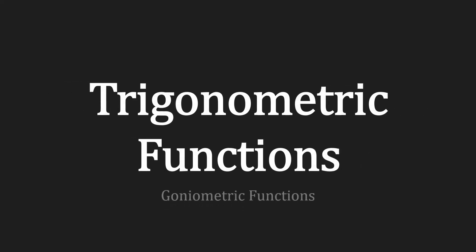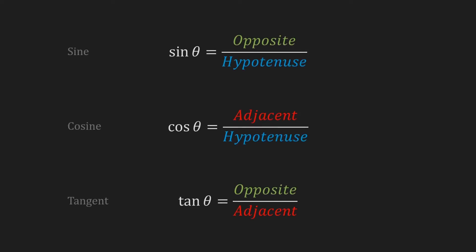We also call them goniometric functions. The first three ones we'll have a look at are the sine, cosine and tangent. The sine of an angle is defined as the length of the opposite side divided by the length of the hypotenuse. The cosine is defined as the adjacent side over the hypotenuse and the tangent as the opposite side over the adjacent side.